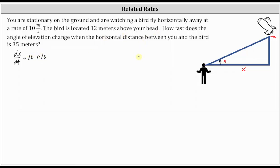We also know the bird is located 12 meters above your head, which we would think of as this distance here. Because we're looking for the angle of elevation, if this distance up to the bird is 12 meters, then this leg of the right triangle would also be 12 meters. Notice how this isn't going to change because the bird is flying horizontally. Let's label the distance from your eyes to the bird z, which would be the hypotenuse of the right triangle. Because we're trying to find how fast the angle of elevation changes when the horizontal distance between you and the bird is 35 meters, we are looking for dθ/dt when x, the horizontal distance, is exactly 35 meters. Now we need to write an equation that involves the angle theta. We also want to include 12, the vertical distance which doesn't change, and also include x because we know dx/dt is equal to 10 meters per second.